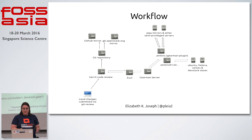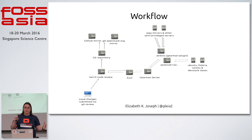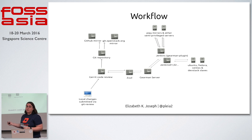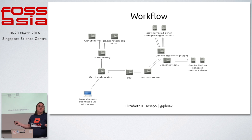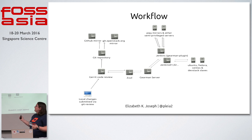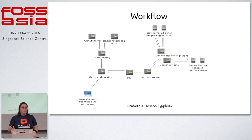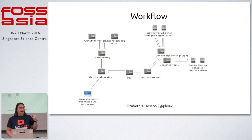This is sort of the workflow: you've got local changes on your own computer, you send changes up to Gerrit for code review — instead of doing a pull request with GitHub, you send them to Gerrit. It goes over to Zuul, sends to GearMan, and then GearMan sends it to a Jenkins master for testing. Once it's all tested, people review the code, it goes through testing again to make sure nothing has changed, and then it lands in our Git repository, which is mirrored to GitHub and git.openstack.org.